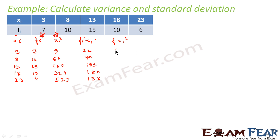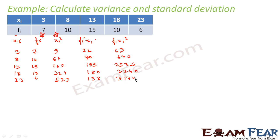Now we find fi·xi squared by multiplying fi by xi squared: 7 into 9 is 63, 10 into 64 is 640, 15 into 169 is 2535, 10 into 324 is 3240, and 6 into 529 is 3174. We now have all the values needed for the formula.